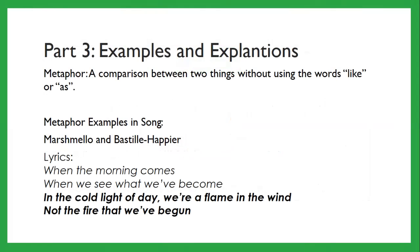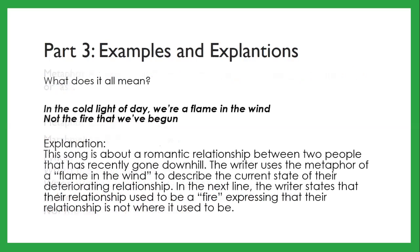So metaphors are used in songs and poems quite often. This is from Marshmello featuring Bastille, which is Happier. The lyrics are: when the morning comes, when we see what we've become, in the cold light of day, we're a flame in the wind, not the fire that we've begun. So the metaphor is, in the cold light of day, we're a flame in the wind, not the fire that we've begun. So what does it mean? This song is about a romantic relationship between two people that has recently gone downhill. The writer uses the metaphor of the flame in the wind to describe the current state of their deteriorating relationship. In the next line, the writer states that their relationship used to be a fire, expressing that their relationship is not what it used to be.